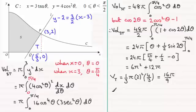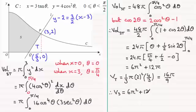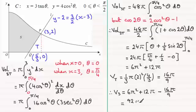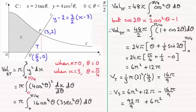The volume generated by S is the combined volume minus the cone volume: V(S) = (6π² + 12π) − 16π/9 = 6π² + 92π/9. This is in the required form pπ + qπ², where p = 92/9 and q = 6, both rational. That brings us to the end of the question.